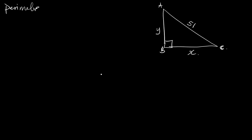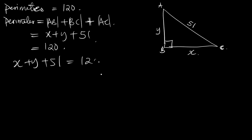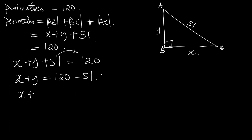The perimeter of the triangle is equal to 120. The perimeter is equal to the sum of all the sides, so we have AB plus BC plus AC, which is x plus y plus 51, and this equals 120. So x plus y plus 51 equals 120. Moving 51 to the other side, x plus y equals 120 minus 51, which means x plus y equals 69. This is Equation 1.